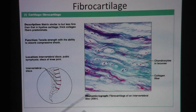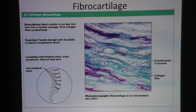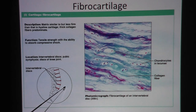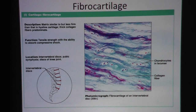Where are we in the body? Fibrocartilage, because of its great strength and the large number of collagen fibers, will be found in places in the body that require a lot of strength — such as the intervertebral disc in the spinal column. We also have fibrocartilage in the pubic symphysis, that's the middle piece of cartilage holding the right and left pelvic bone together in the front. And also in the knee joint, we have fibrocartilage.